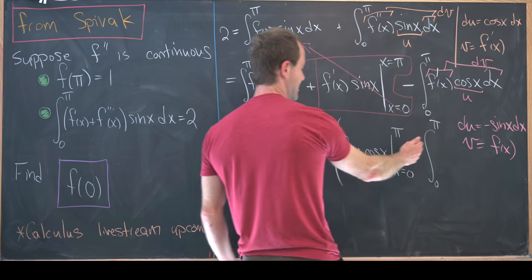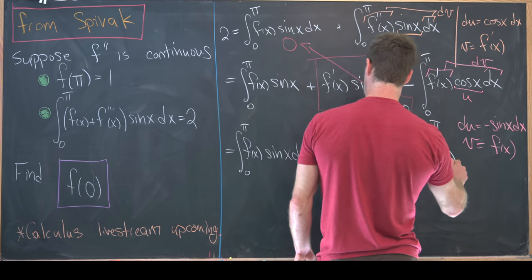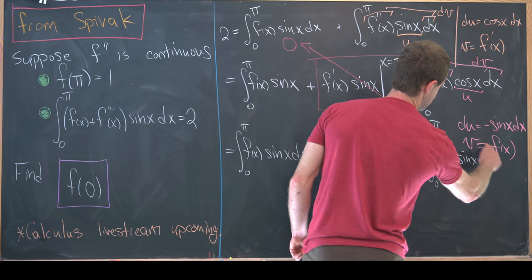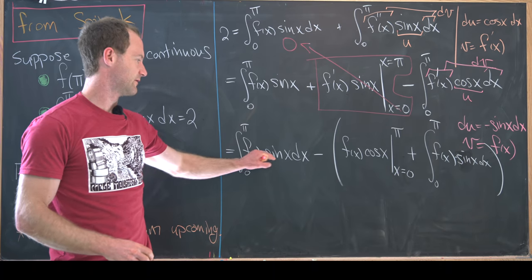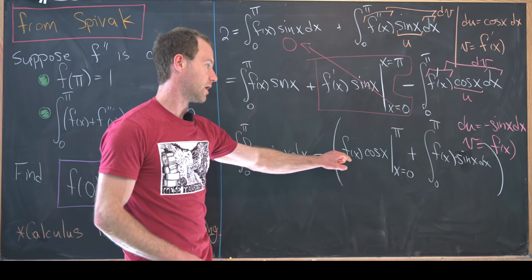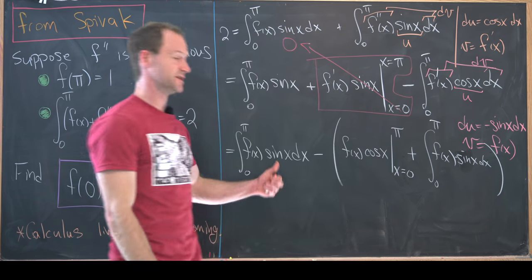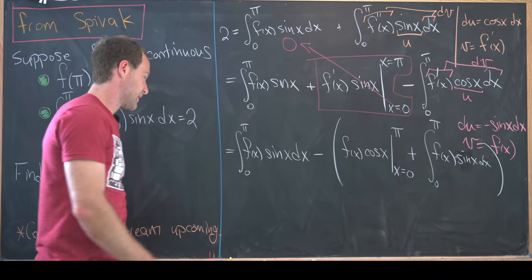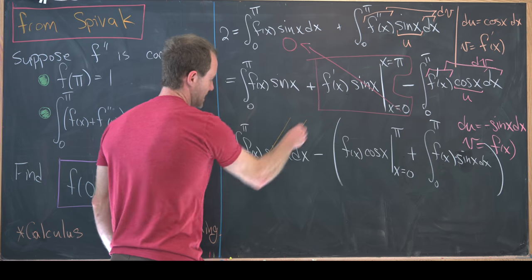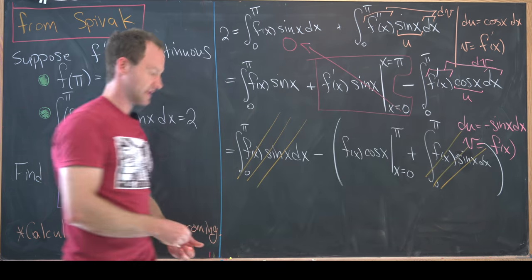We can take this minus and this minus and cancel them, and we're left with f(x) times sin(x) dx. Now we see that we have the integral from zero to π of f(x) sin(x) minus all of this stuff. But notice this stuff includes this integral which is outside and with the opposite sign. So this guy right here can cancel this guy right here after distributing that minus sign.